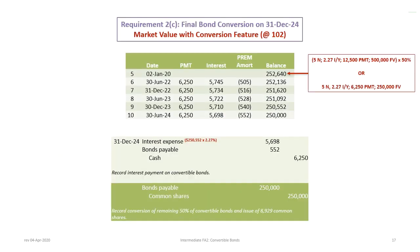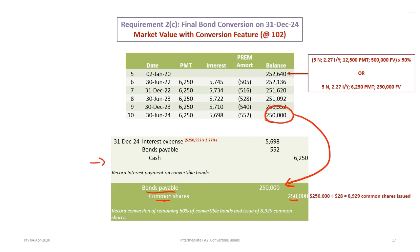After updating the interest, we record the final conversion. The bond payable has a balance of $250,000, so we debit bond payable for $250,000. With the zero equity approach, no amount was attributed to the conversion option, so there is no conversion option to adjust. The full amount goes to common shares: $250,000. At a market price of $28, that results in 8,929 shares issued. Record the remaining 50% conversion and issue 8,929 common shares.